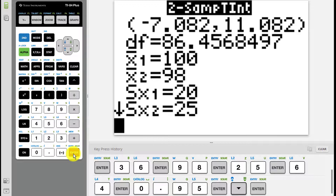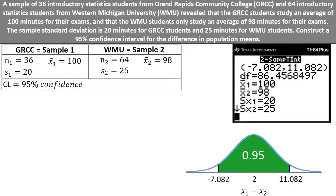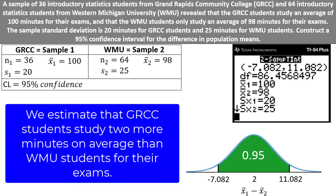The confidence interval ranges from negative 7.082 to 11.082. What's even more important is that you understand what this confidence interval means. If we draw the distribution, we can include the confidence interval bounds. The value in the middle is our point estimate of x-bar1 minus x-bar2, which is 100 minus 98, or 2. This means that we estimate that GRCC students study two more minutes on average than WMU students.